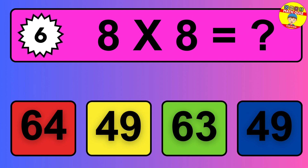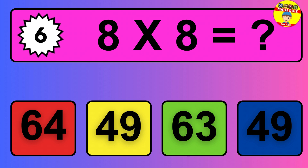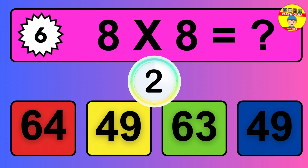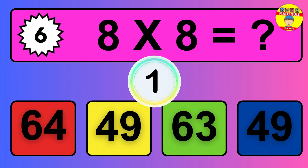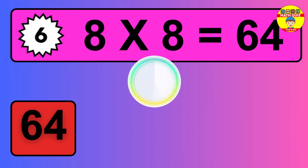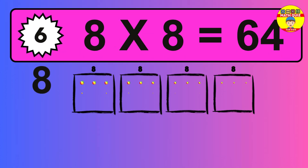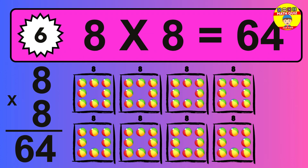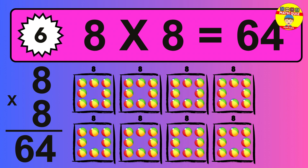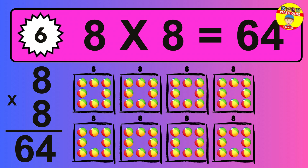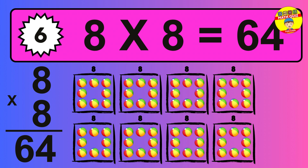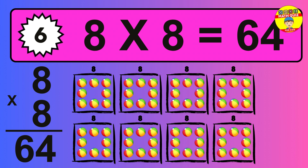Question 6. 8 times 8 equals what? So the answer is 8 times 8 is 64. To calculate, we have 8 groups with 8 balls each one. So how many balls do we have? 64 balls.